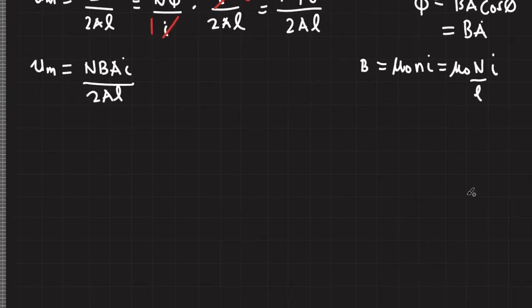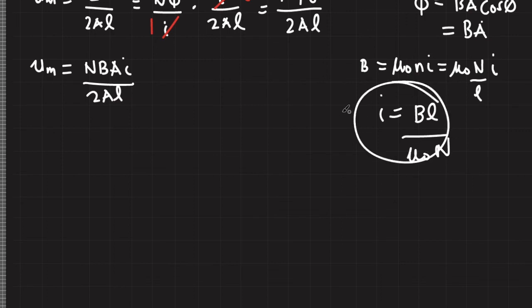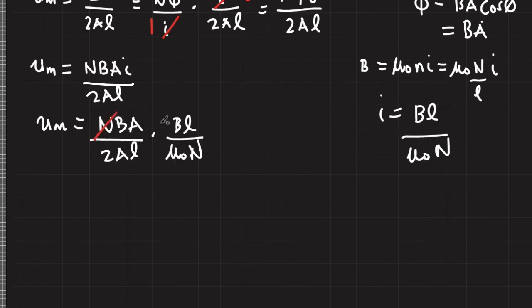So let me rewrite this in terms of current. I'll have I equals B L over mu naught N. So I'll plug this to our current to get rid of current. Number of turns cancel and L cancels out and A cancels out.